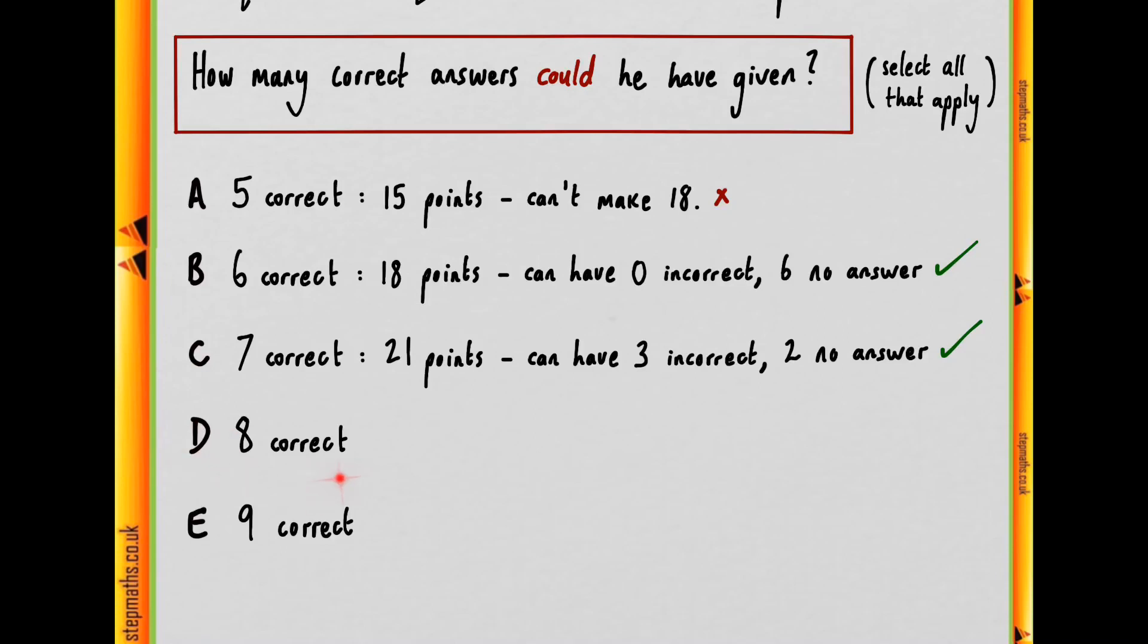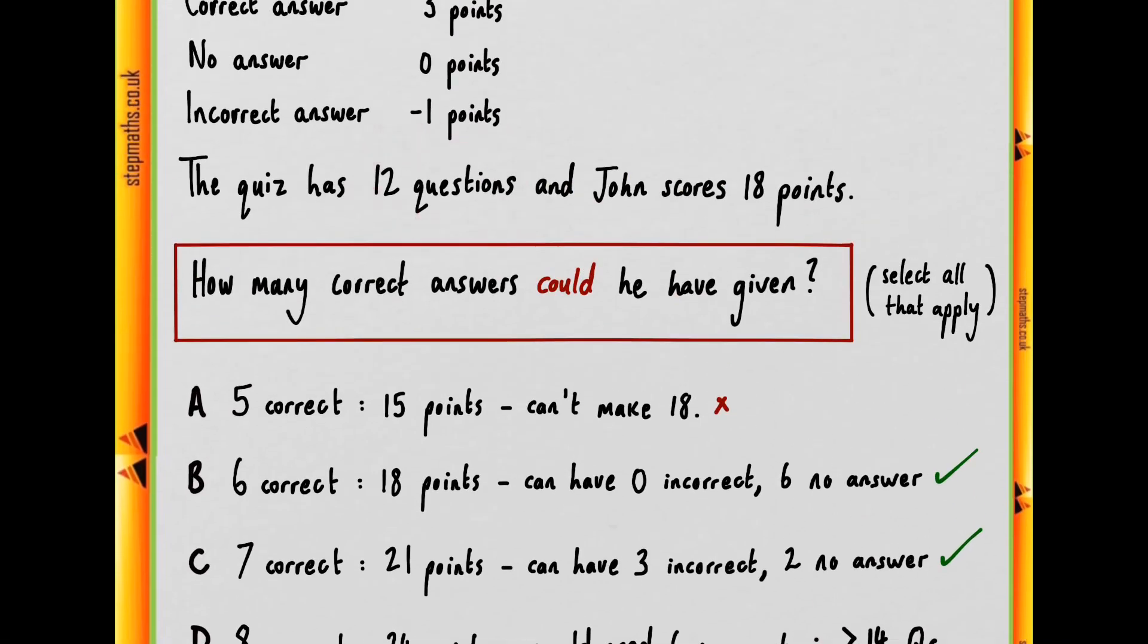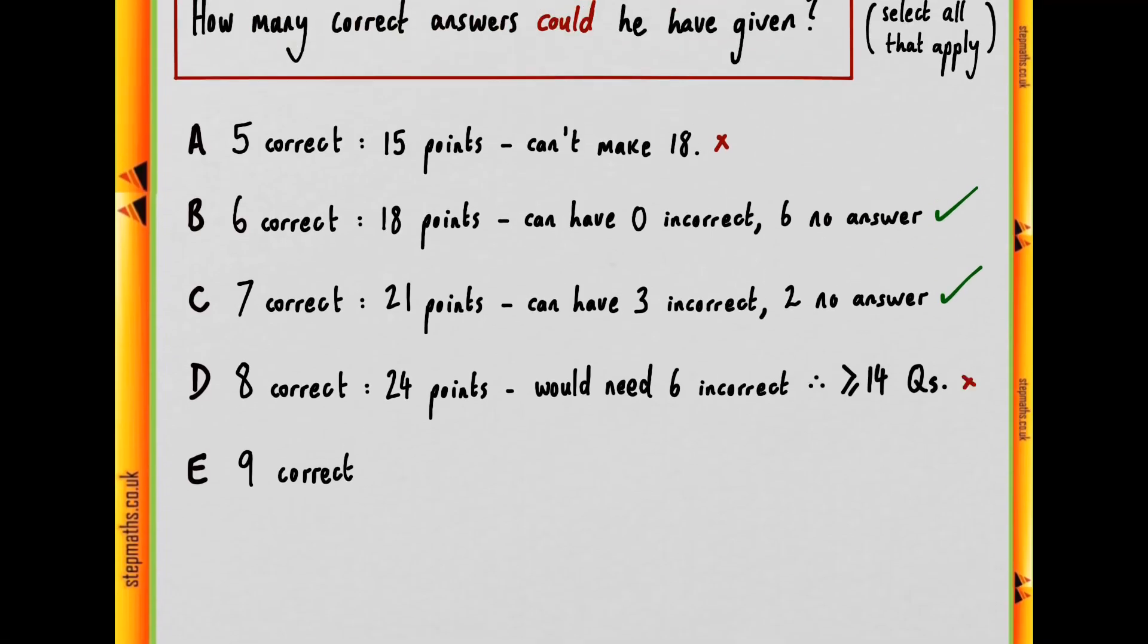And then let's move on to D, which is eight correct. Multiplying by three, you get 24 points. You can say you'd need six incorrect to get you down to 18. However, since we have eight correct here, eight plus six is already 14 questions, so at minimum you need 14 questions. However, we only have 12 questions in the quiz, so this is not viable.